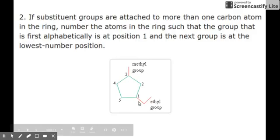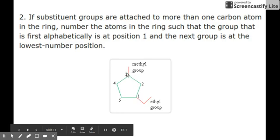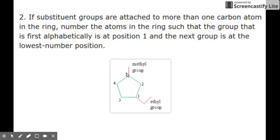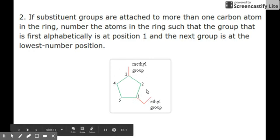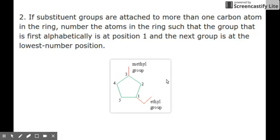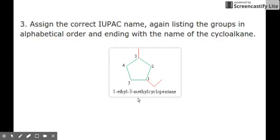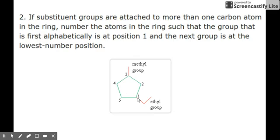That means when we number them, we number ethyl first, then the methyl. However, you have the option. Because it's cyclic, you can number it counterclockwise or clockwise. What is the correct way of numbering our cyclic alkane? The way to number it is you number it in such a way that the total of the branches will be the least.